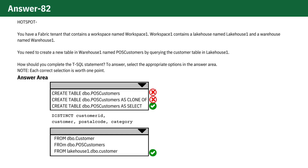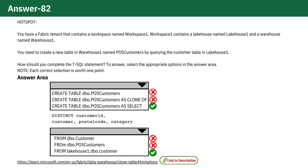The option 'FROM dbo.Customer' is incorrect because this option would refer to a customer table within the same database, likely Warehouse 1, but it doesn't specify Lakehouse 1 as the source. The question explicitly states that the data needs to be queried from Lakehouse 1. The option 'FROM dbo.POS Customers' incorrectly references the table you are supposed to create, dbo.POS Customers, as the source. Since this table does not exist yet, it can't be the data source for the new table creation, so this is also an incorrect option.